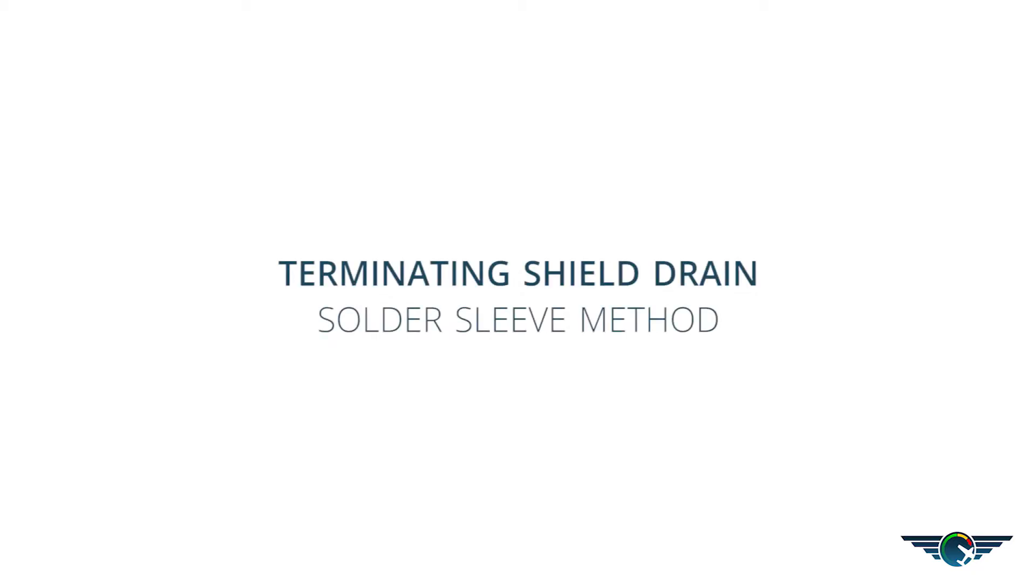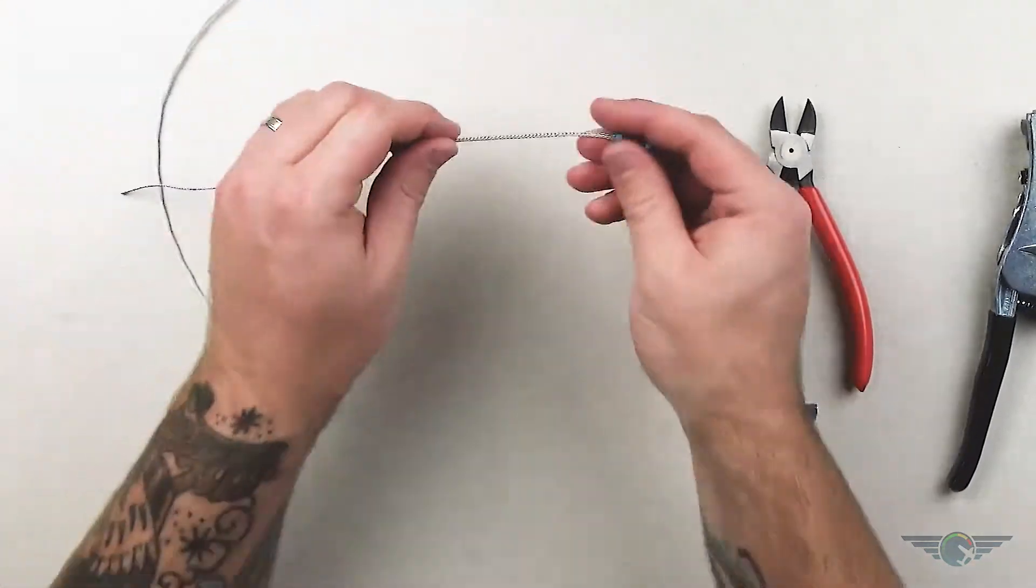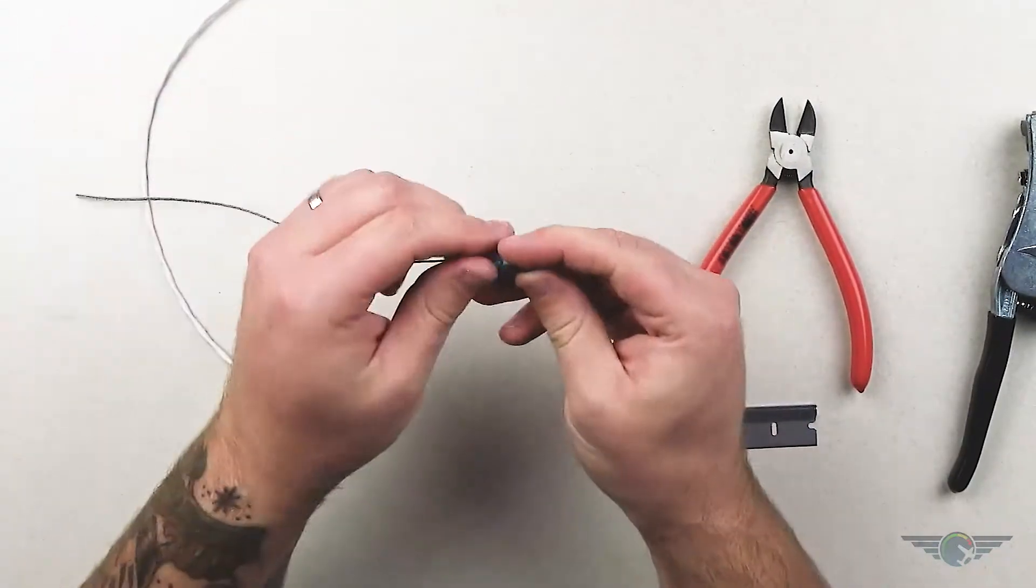I'm going to show you how to terminate your shield on your canvas using a solder sleeve. The solder sleeve has a braid attached to it, though you can get them with a wire attached as well.